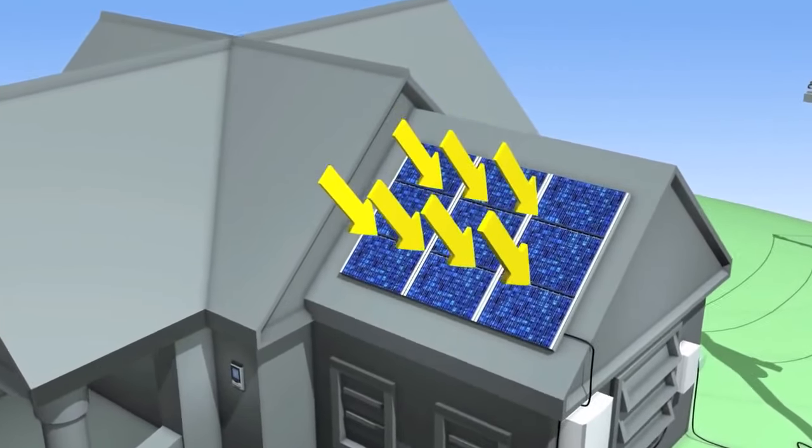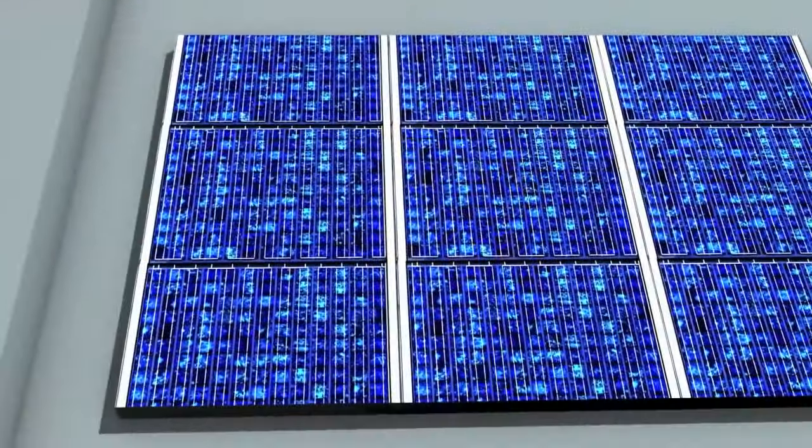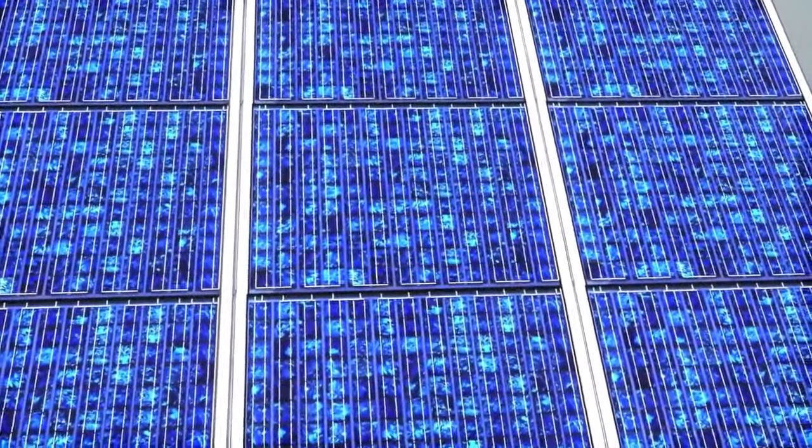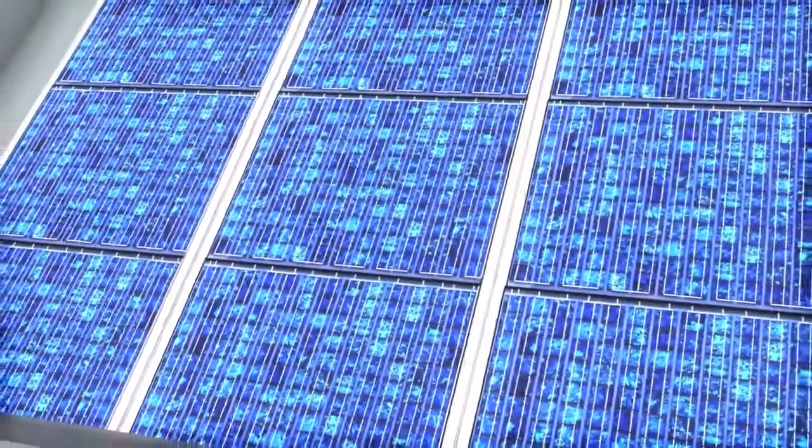When sunlight hits the modules on a solar photovoltaic, or PV, installation, the modules convert the sun's energy into electricity that can be used to power your home.